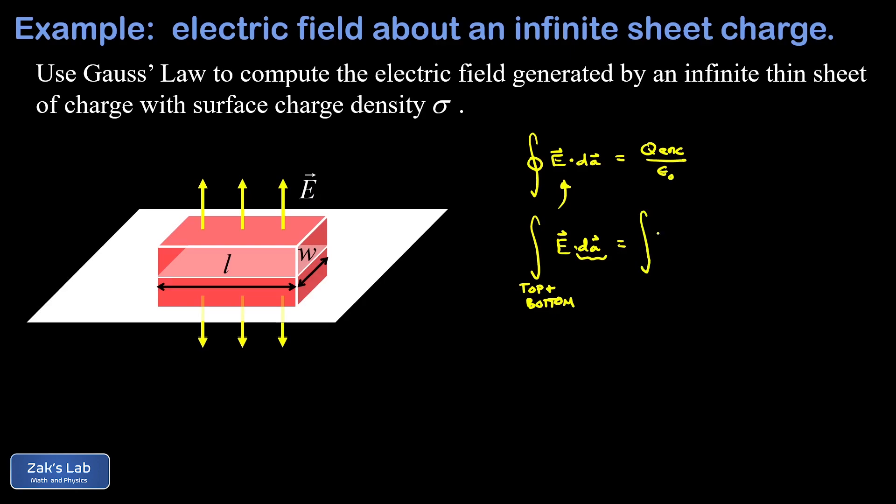Now I have the integral of E times dA over the top and bottom, but the electric field magnitude is constant along that top and bottom surface. Those surfaces are exactly the same distance away from the infinite sheet and they're parallel to the infinite sheet, so there's no way the electric field could be changing in magnitude along those surfaces. Because E is a constant we can now factor that out of the integral.